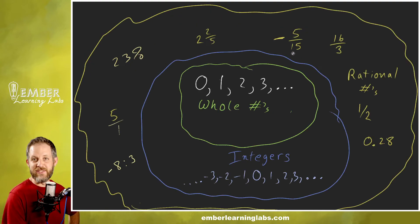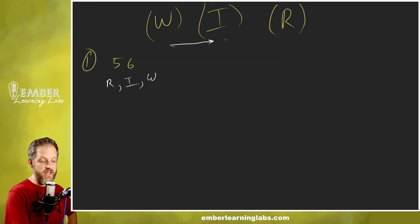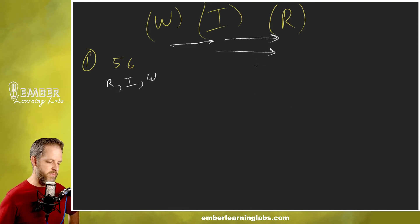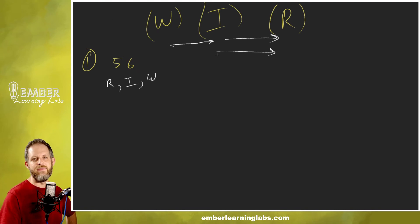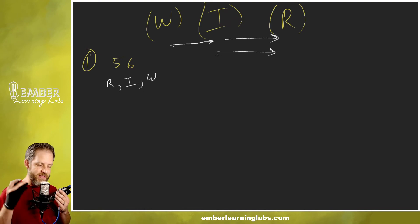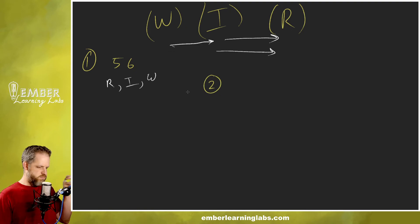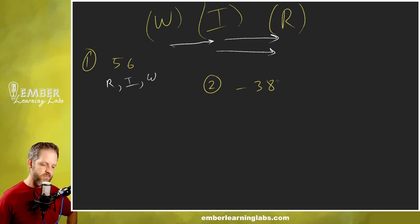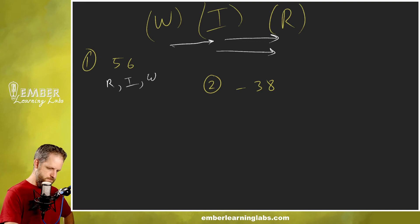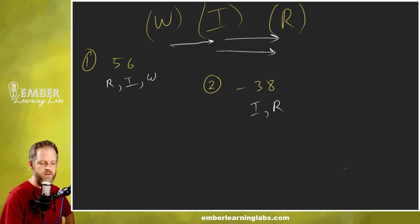If it's a whole number, look at our diagram — whole numbers is the smallest set. So if it's a whole number it's also an integer, and it's also a rational number. If it's an integer it's also a rational number. So if it's a W, it's also everything else. What about negative 38? That is not a whole number, so we cross that off. But it is an integer, so it's an I — and if it's an I, then it's also an R.